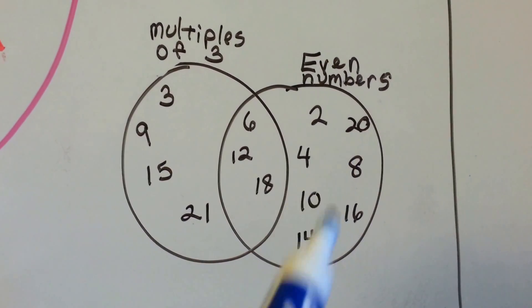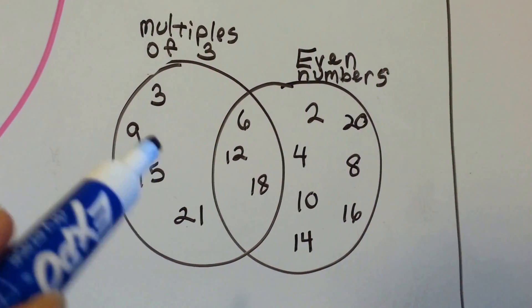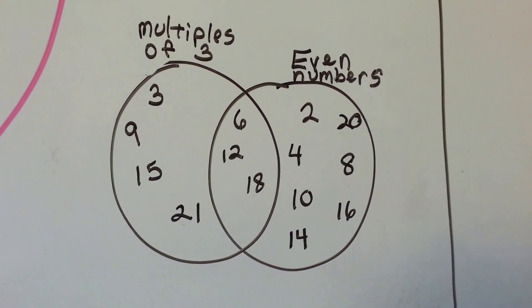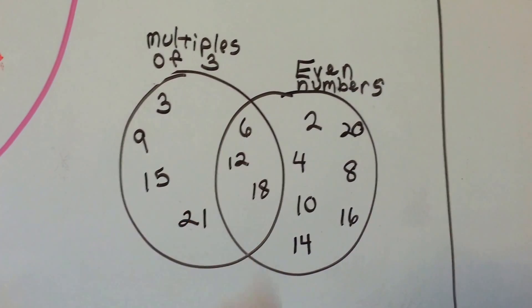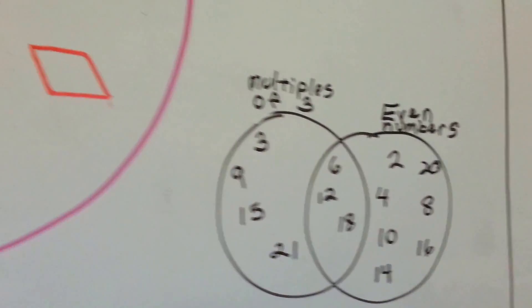So see, all the ones over here are even, all the ones over here are multiples of 3, and the ones in the center are both even and multiples of 3. See how the center part shares what they both have? That's a Venn diagram.